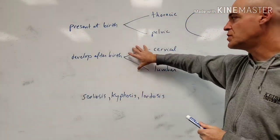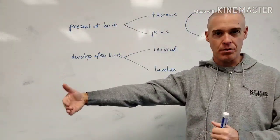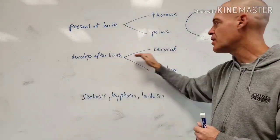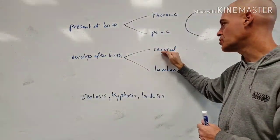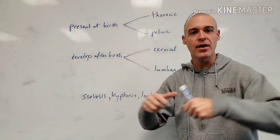Now, what are the two curves that then develop after birth? These are the two here that are going to develop after birth. We've got the cervical and the lumbar curves. Now, the question is how do they develop?